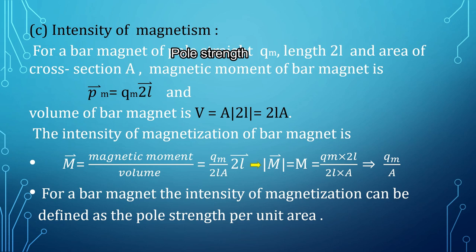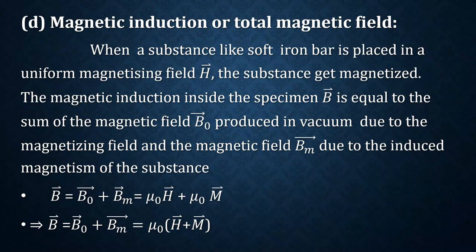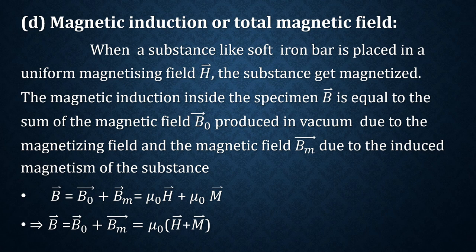Magnetic induction: when a substance like a soft iron bar is placed in a uniform magnetizing field H vector, the magnetic induction inside the specimen B vector equals the sum of the magnetic field B_0 produced in vacuum due to the magnetizing field and the field B_m due to the magnetism of the substance. So B vector equals mu_0 H vector plus mu_0 M vector.